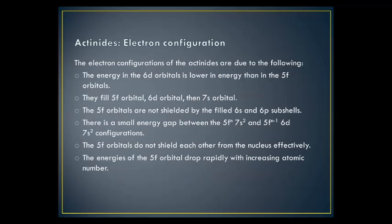The electron configurations of the actinides are due to the following: the energy in the 6d orbitals is lower in energy than in the 5f orbitals; they fill the 5f orbital, then 6d orbital, then 7s orbital. The 5f orbitals are not shielded by the filled 6s and 6p subshells. There is a small energy gap between the 5f and 7s² and 5f and 6d7s² configurations. The 5f orbitals do not shield each other from the nucleus effectively, and the energies of the 5f orbitals drop rapidly with increasing atomic number.